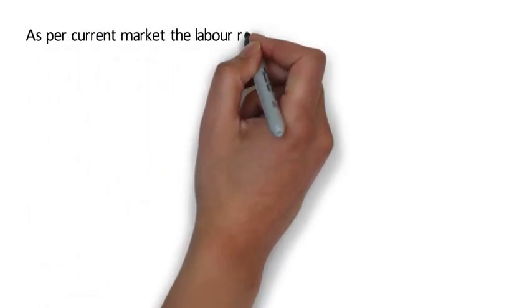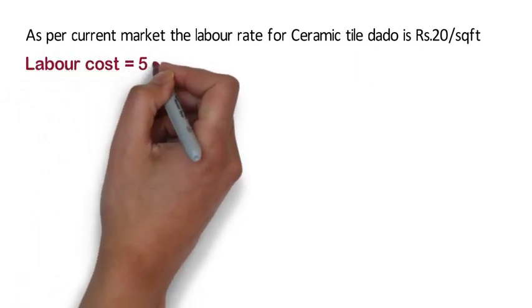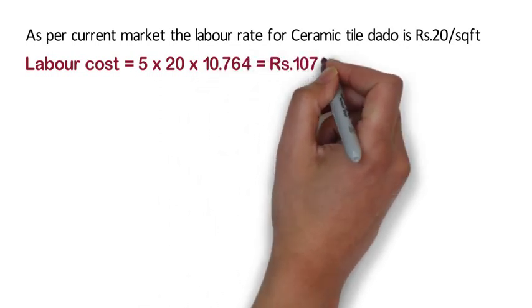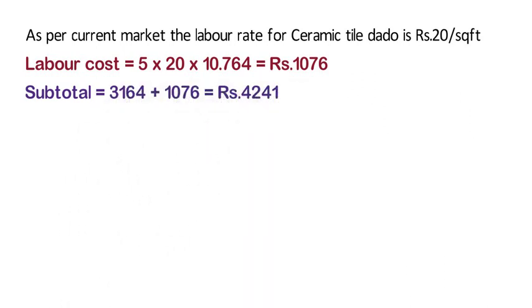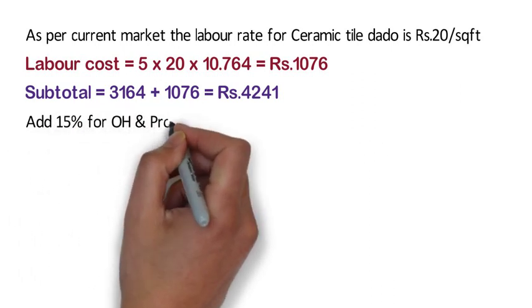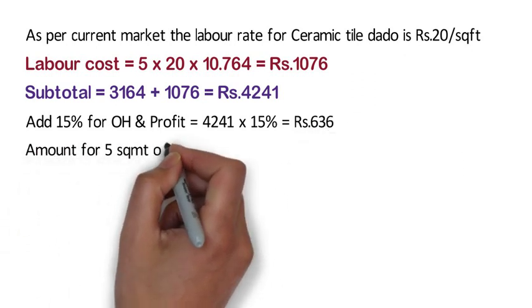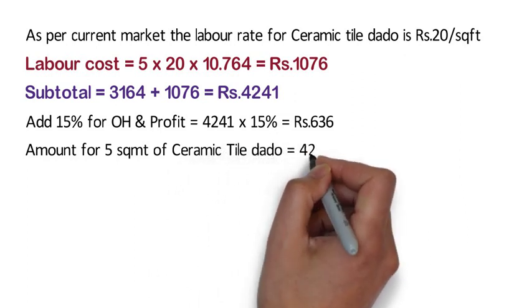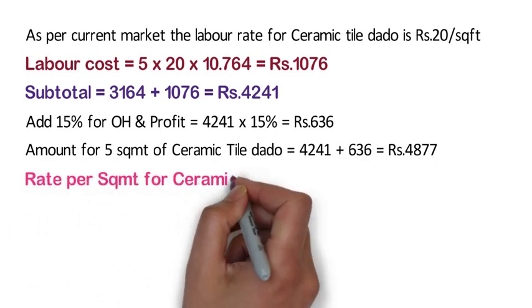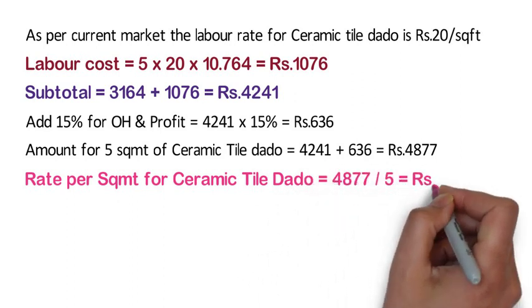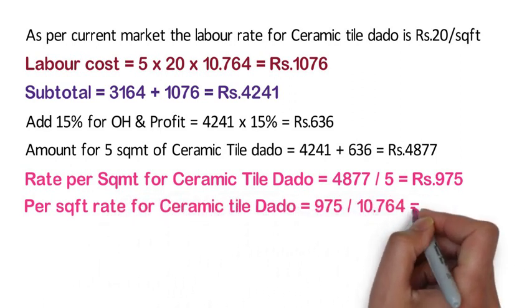As per current market rate, the labour rate for ceramic tile dado is 20 rupees per square feet. Hence, for 5 square meters, the labour cost shall be 5 x 20 x 10.764 = 1,076 rupees. The subtotal is 3,164 plus 1,076 = 4,241 rupees. Adding 15% for overhead and profit: 4,241 x 15% = 636 rupees. The amount for 5 square meters of ceramic tile dado is 4,241 plus 636 = 4,877 rupees. Rate per square meter is 4,877 divided by 5 = 975 rupees. Rate per square feet is 975 divided by 10.764 = 91 rupees.